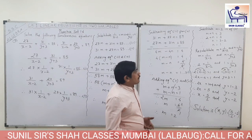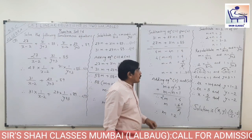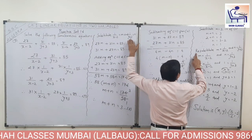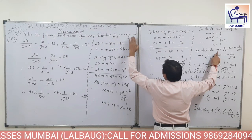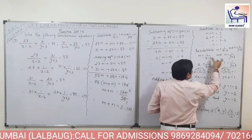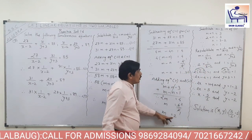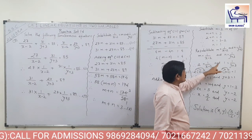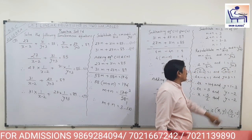The remaining part: we have to resubstitute M and N to get x and y. M is equal to 1 upon (x minus 2) and N is equal to 1 upon (y plus 3). M's value is 2 and N's value is 1. So 2 is equal to 1 upon (x minus 2) and 1 is equal to 1 upon (y plus 3).